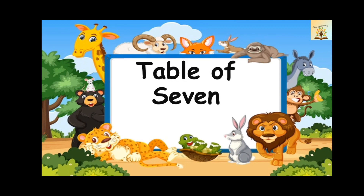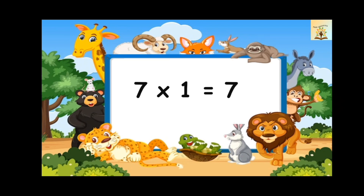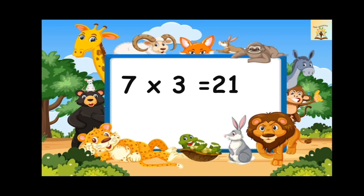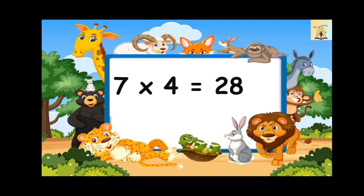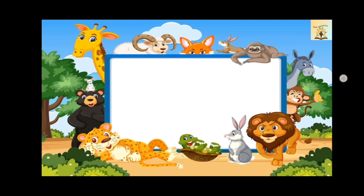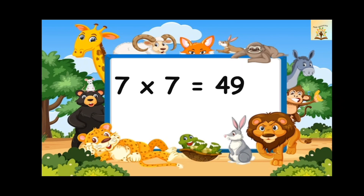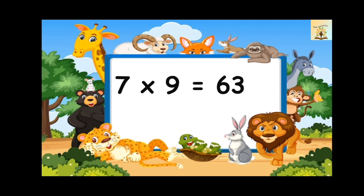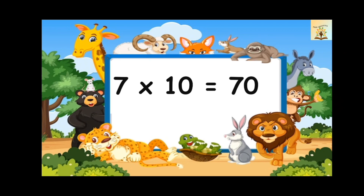Table of seven. Seven ones are seven. Seven twos are fourteen. Seven threes are twenty-one. Seven fours are twenty-eight. Seven fives are thirty-five. Seven sixes are forty-two. Seven sevens are forty-nine. Seven eights are fifty-six. Seven nines are sixty-three. Seven tens are seventy.